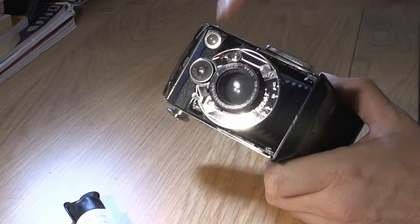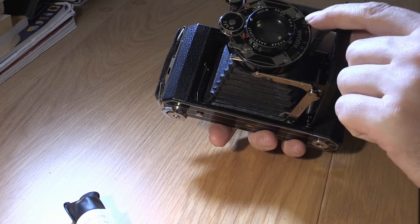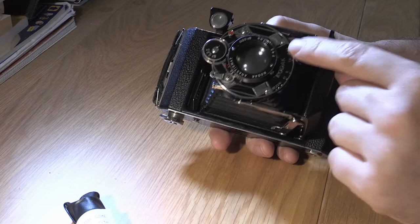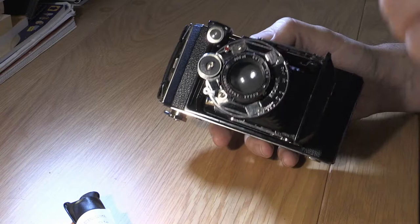This is the viewfinder, so you look down there and you see a little picture out the front. Your lens, so on the side here you've got your aperture, this goes from f4.5 to f32. Always check that the aperture works as well when you can look through. Here's your shutter release, so you can hear the shutter go there.